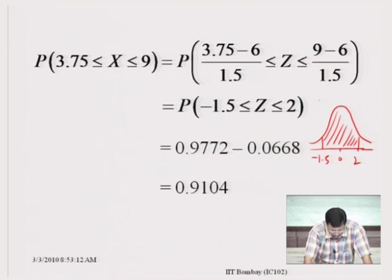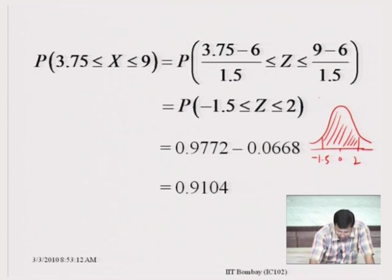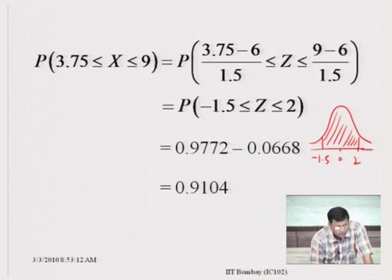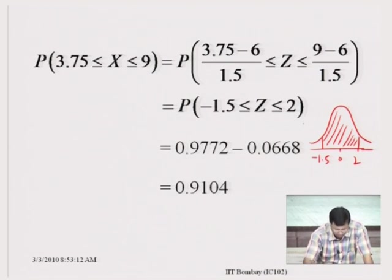That gives us the area corresponding to the Z curve between minus 1.5 and 2. This can be worked out from the table: the area on the left of 2 is 0.9772 minus the area on the left of minus 1.5. For the latter, we first find the area on the right of 1.5, which gives the value 0.0668.